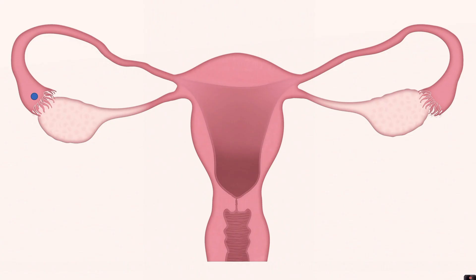This is a diagram of the female reproductive system. In this video we're going to talk about what happens after sexual intercourse to produce a baby and how that baby develops within the uterus.